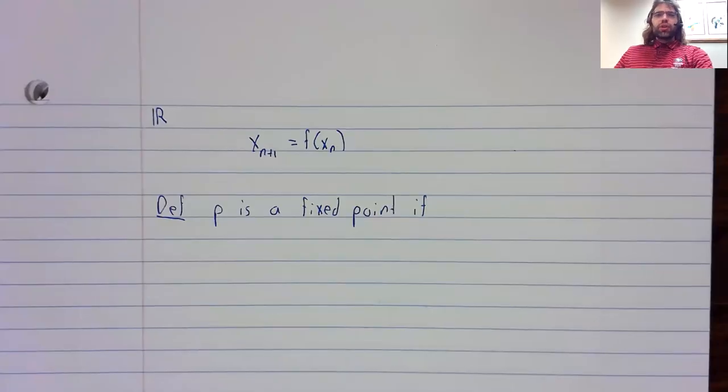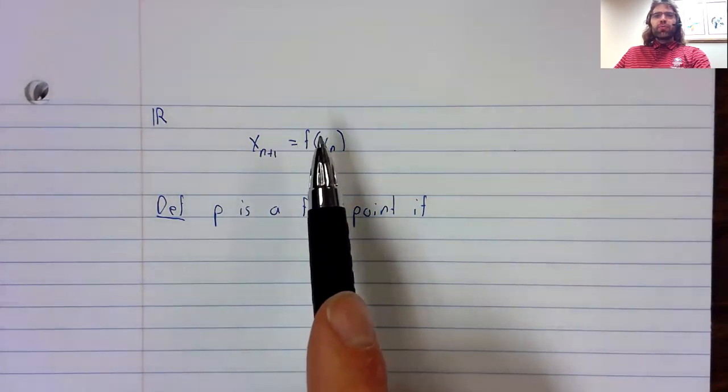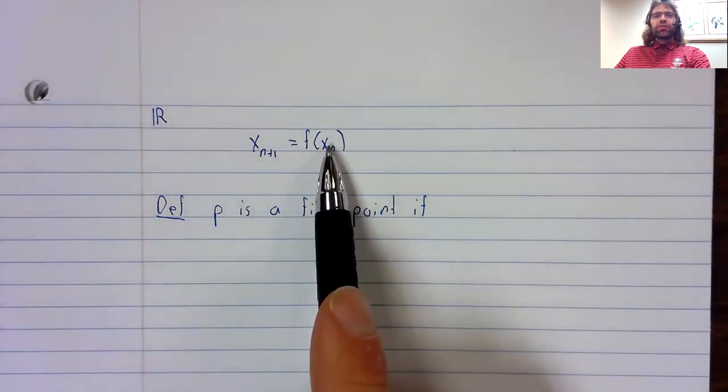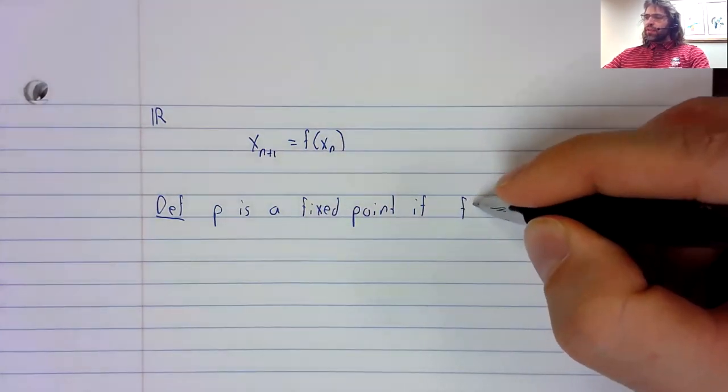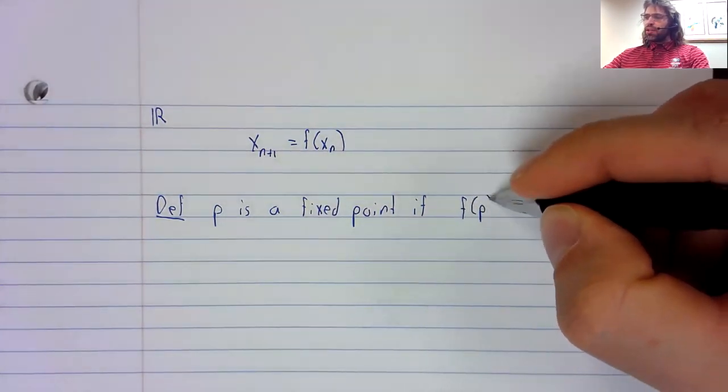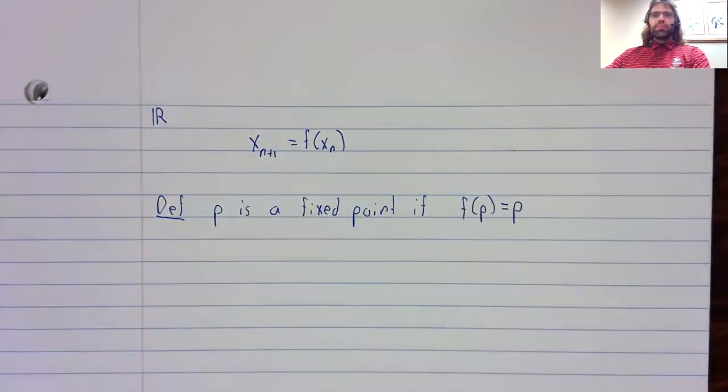A real number p is a fixed point if this new value equals this old value. In other words, if f(p) = p.